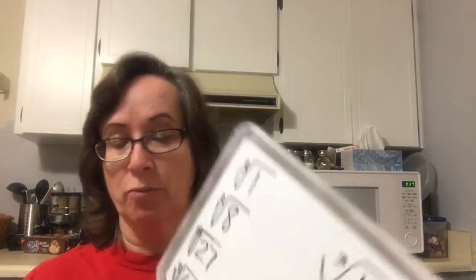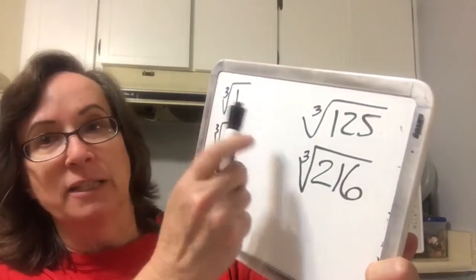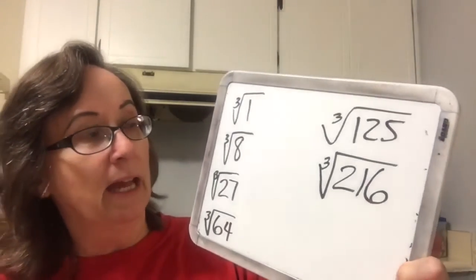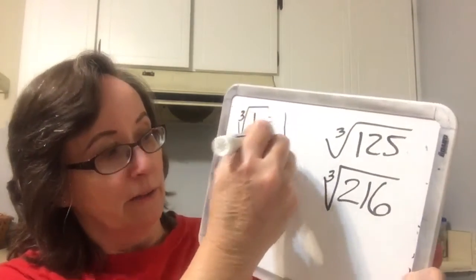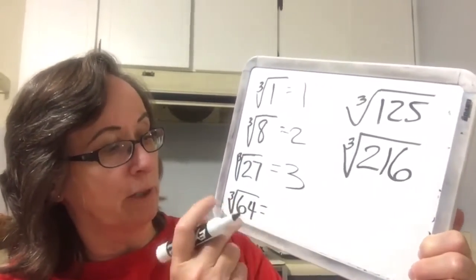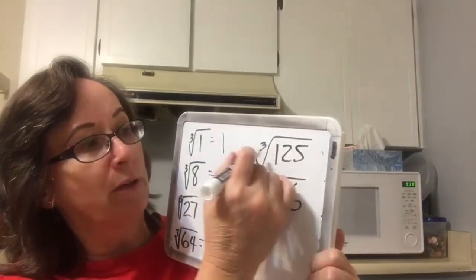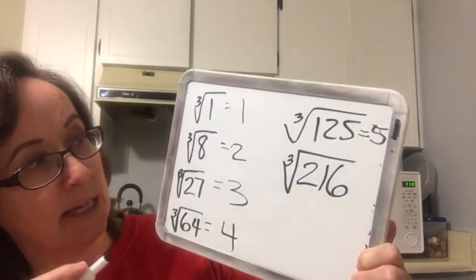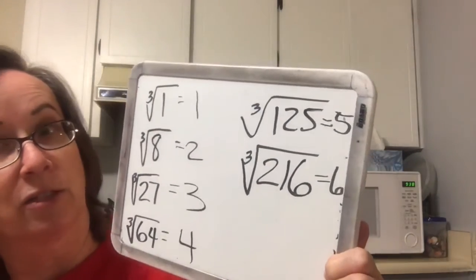The first thing we're going to do is just review the roots that we should know. Since 1 cubed is 1, the cubic root of 1 is also 1. The cubic root of 8 is 2. The cubic root of 27 is 3, because 3 cubed is 27. The cubic root of 64 is 4, because 4 cubed is 64. The cubic root of 125 is 5, because 5 cubed is 125. And the cubic root of 216 is 6, because 6 cubed is 216.